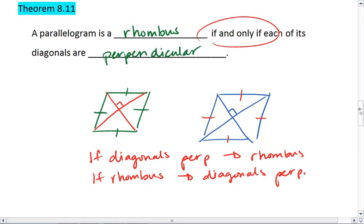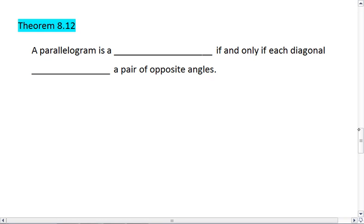Let's move on to the next one, Theorem 8.12. A parallelogram is a rhombus if and only if each diagonal bisects a pair of opposite angles.